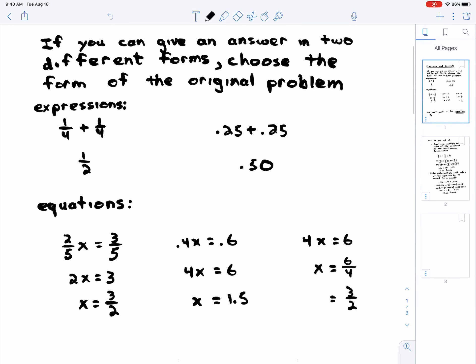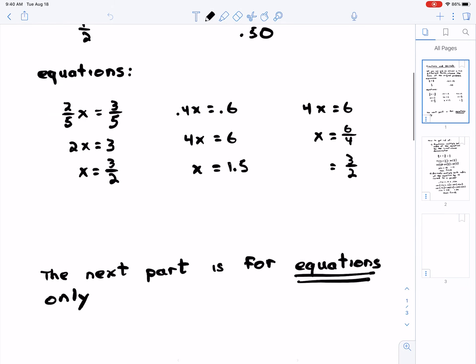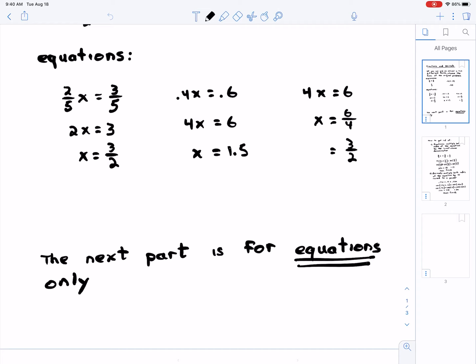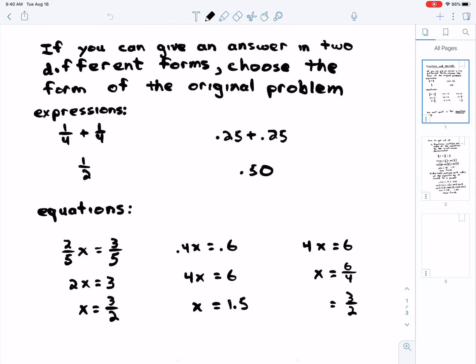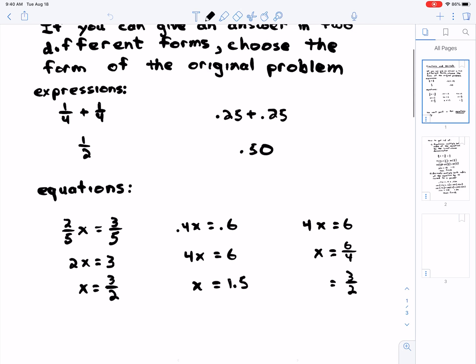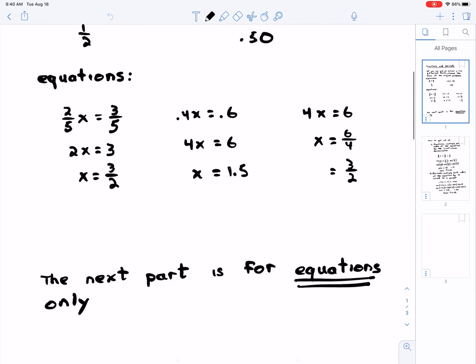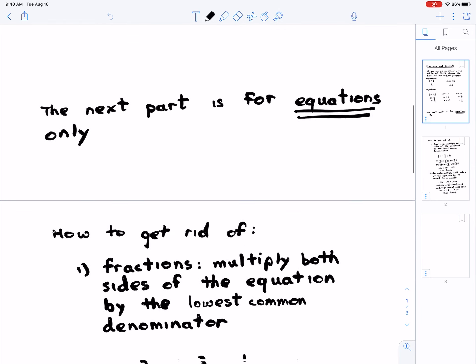Notice that on the first part here, the expressions, I can't get rid of fractions and decimals. But on an equation, that is the first thing you should always do with an equation. You should never deal with a fraction or a decimal if you've got an equation. If you've got an expression, you've got to - you can't change those. But equations, why? Because you do something to both sides of the equation. And so this next part is for equations only.